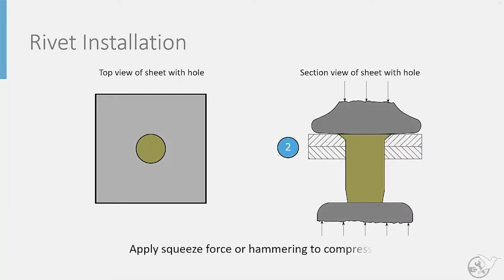In this step, compressive forces are applied to the rivet through either squeezing or hammering. This action causes the rivet to expand, first elastically, then plastically, filling the fastener hole. As the fastener hole is filled, the rivet begins to apply a pressure on the inner surface of the holes in the sheet.